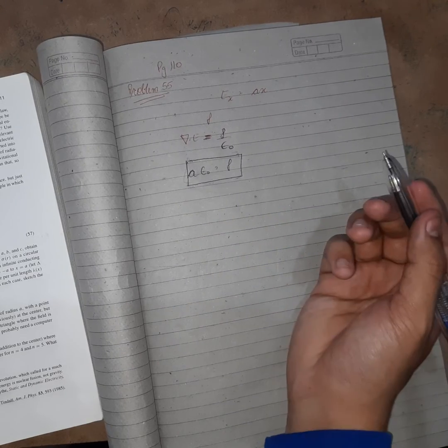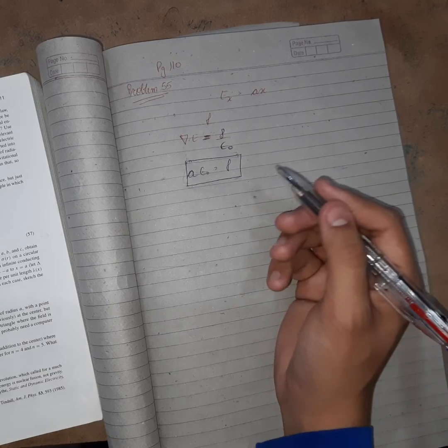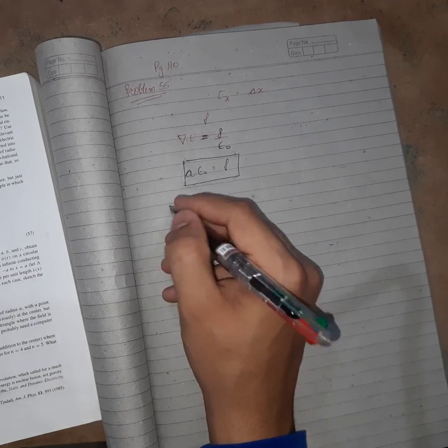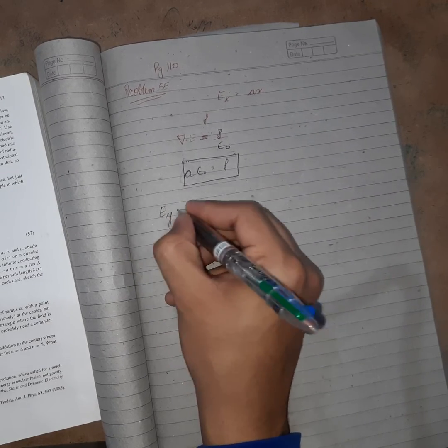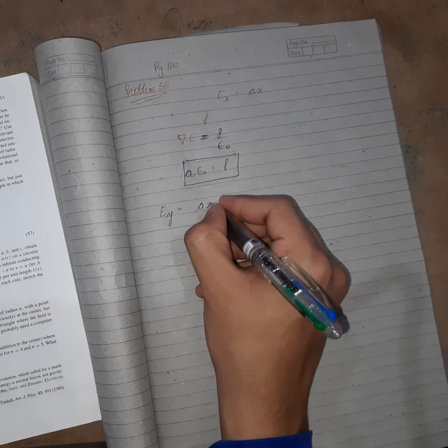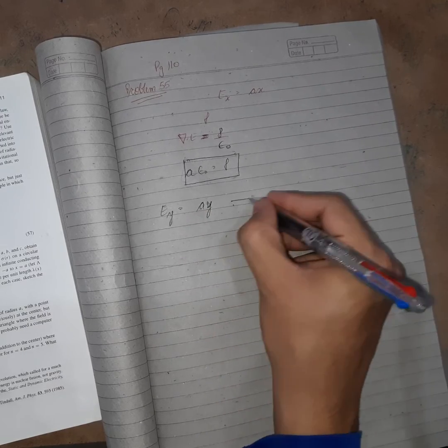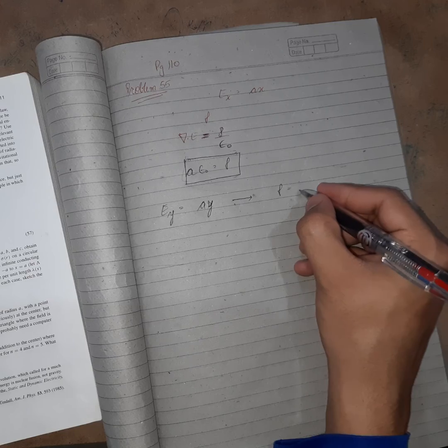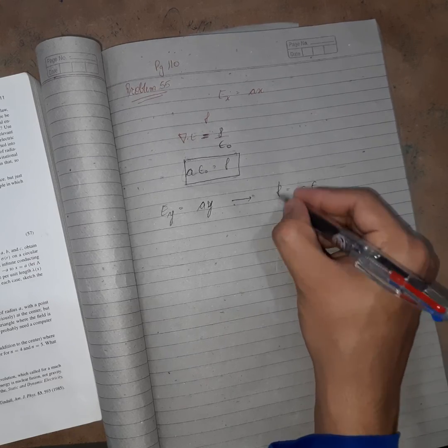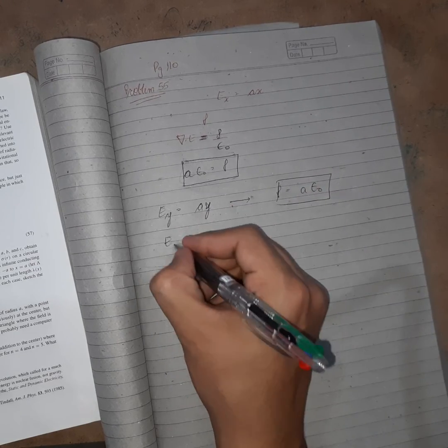He's saying that field points in that particular direction—that's I guess wrong. Why? Suppose Ey was given as ax, suppose ay, and if we are calculating rho, then the rho will also come the same.